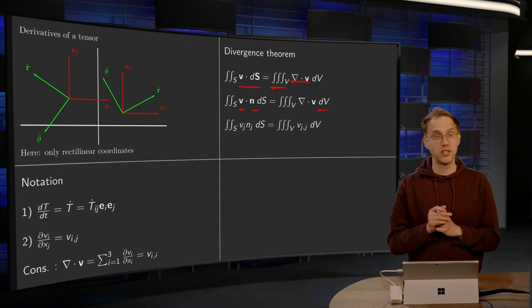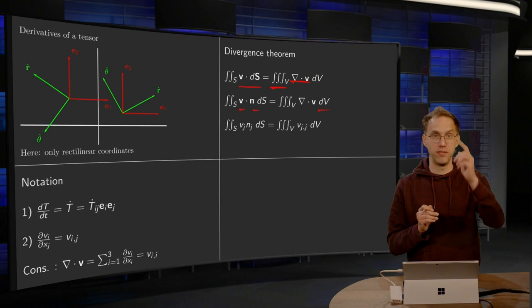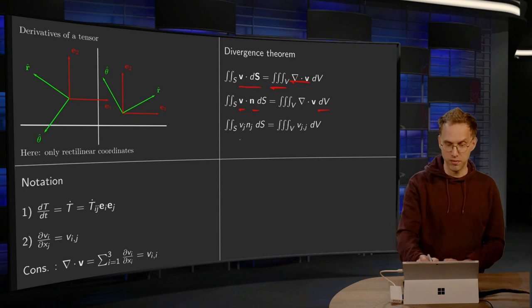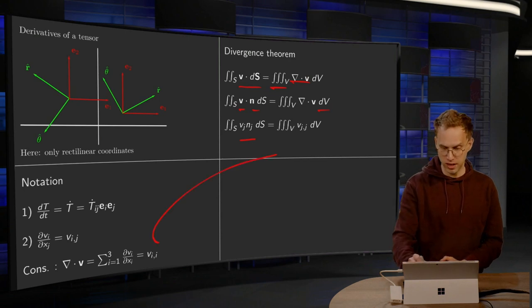Which is equal to the same right hand side over here. And now we can use index notation. v dot normal: if you write v as v_1, v_2, v_3, and normal as n_1, n_2, n_3, you can rewrite this as v_j n_j.